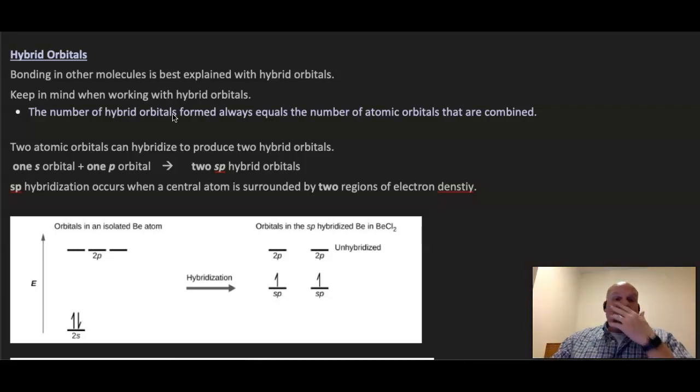So that's where we come to hybrid orbitals. A couple things here before we get started. Keep in mind when working with hybrid orbitals that the number of hybrid orbitals formed always equals the number of atomic orbitals that were combined. Just to make a distinction here, when we refer to atomic orbitals, we're talking about the 1s and the 2s and the 2p that we utilized when we did electron configuration.